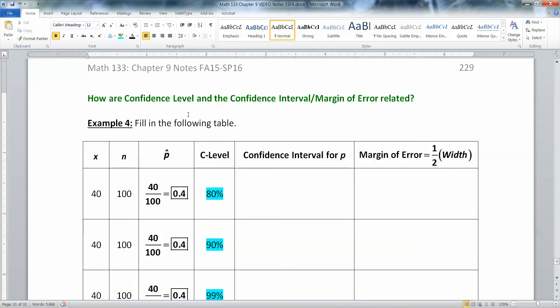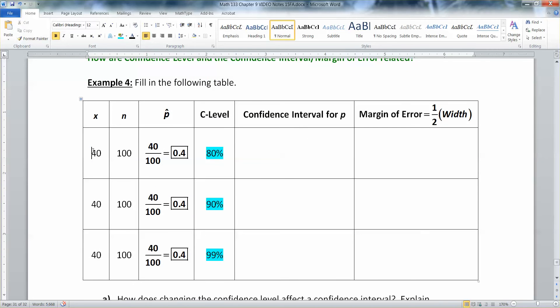What happens if you change your confidence level? I have it set up so that every single one of these has the same x and n. So I went ahead and calculated p-hat. p-hat if you remember is x over n. That's the formula we learned for it in section 8.2. We have x is 40 and n is 100, and that means 0.4 is my p-hat. So p-hat's not changing for this whole problem, but what I am going to change is my confidence level.